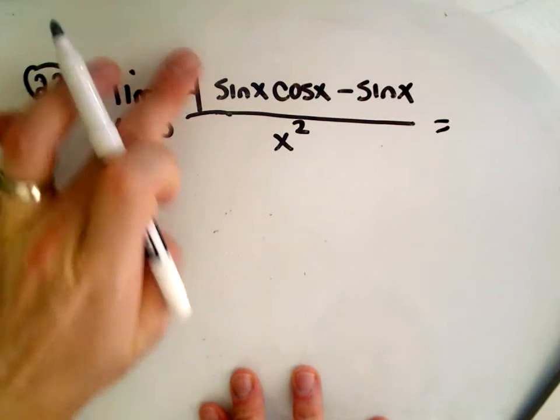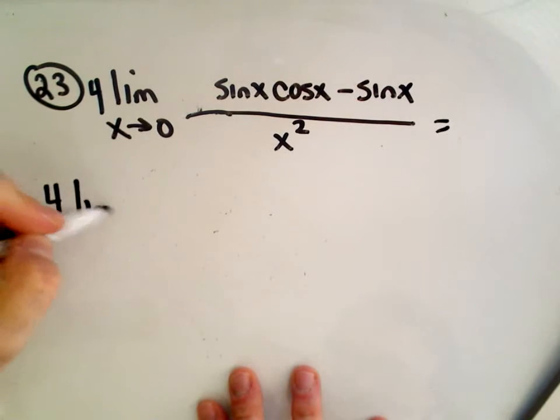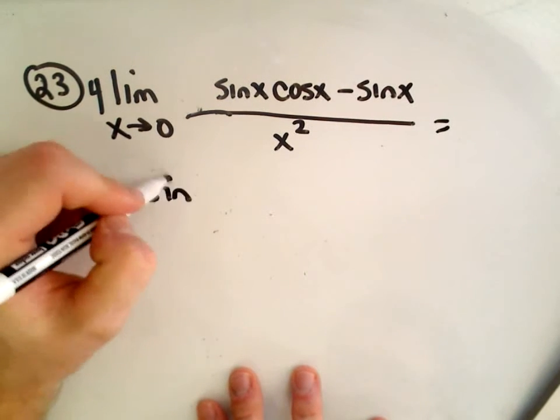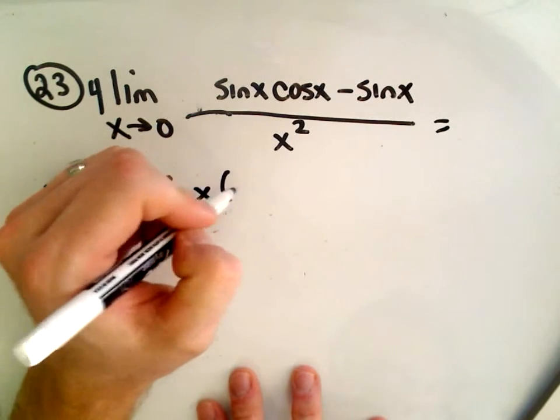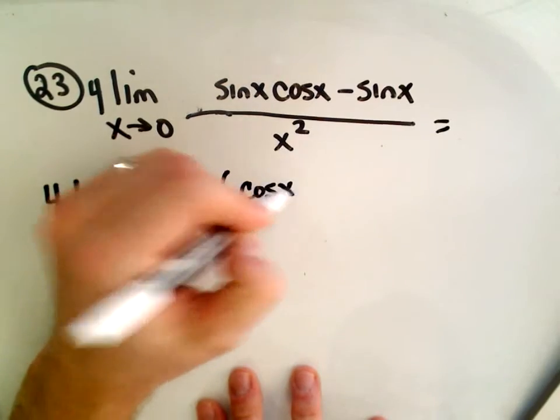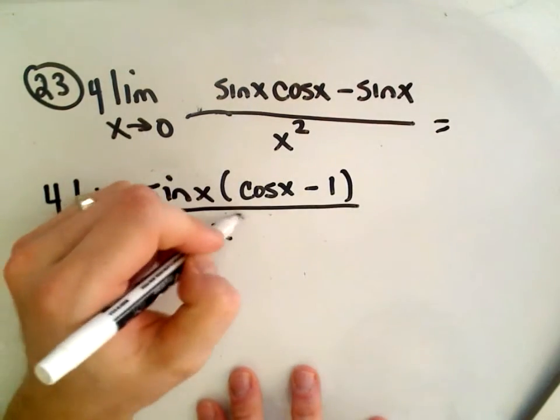Well, the first thing I would do is simply factor the 4 out front just to get rid of that. And then notice we can rewrite this as the limit as x approaches 0. The top has a sine x in both terms. We can factor that out and make it sine x times cosine x minus 1 all over x squared.